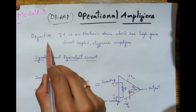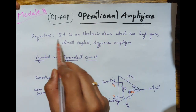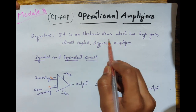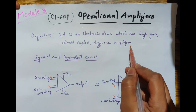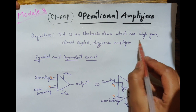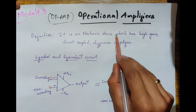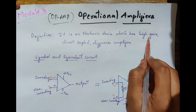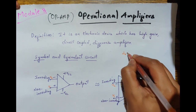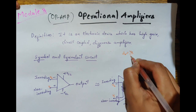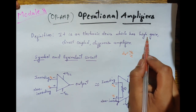First we will see the definition of operational amplifier. The definition says it is an electronic device which has high gain direct coupled difference amplifier. Here high gain refers to the voltage gain of this operational amplifier. High gain means the voltage gain AV, which is the ratio of output voltage to input voltage, is almost equal to infinity.